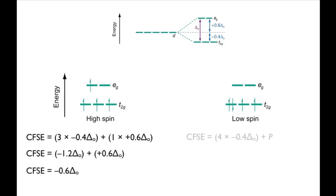For the low spin complex, we've got four electrons in the T2G orbital, so four times minus 0.4ΔO, that's negative because it's lower energy, it's stabilized. So we end up with minus 1.6ΔO plus P, where P is the pairing energy.